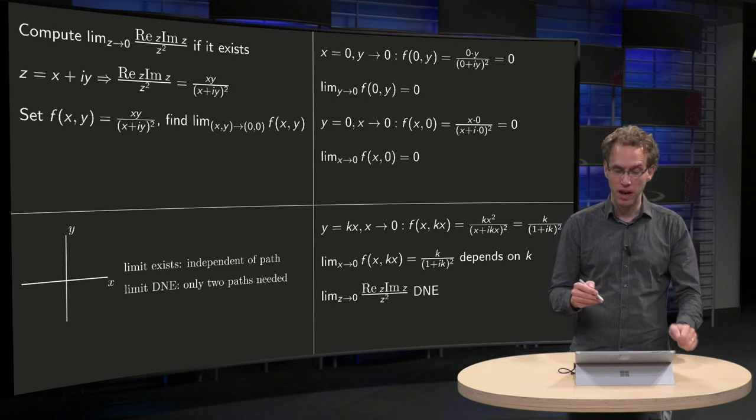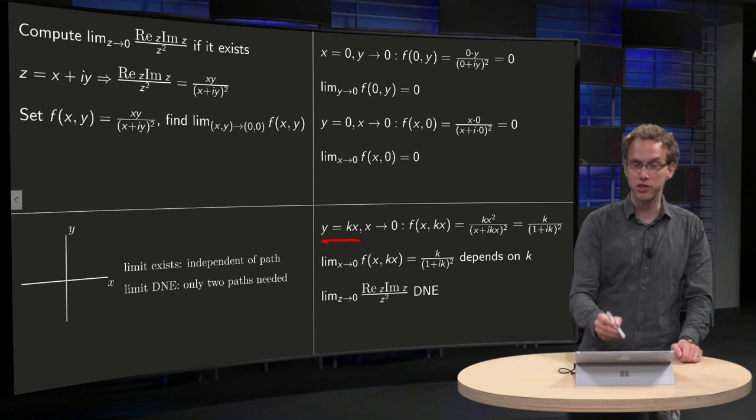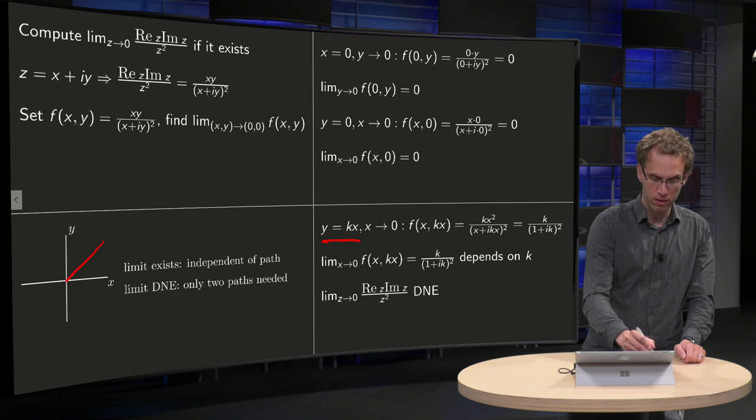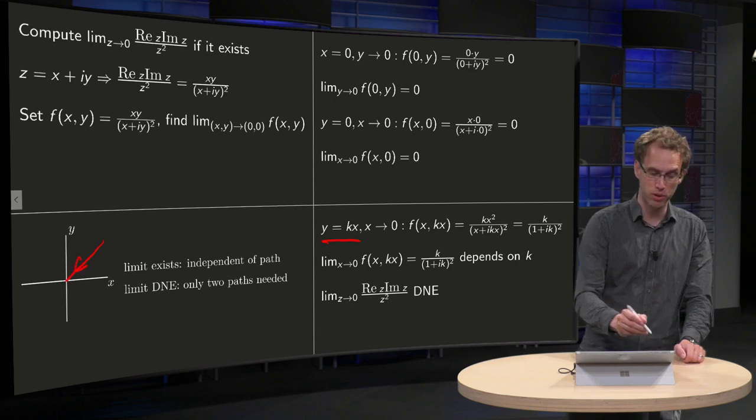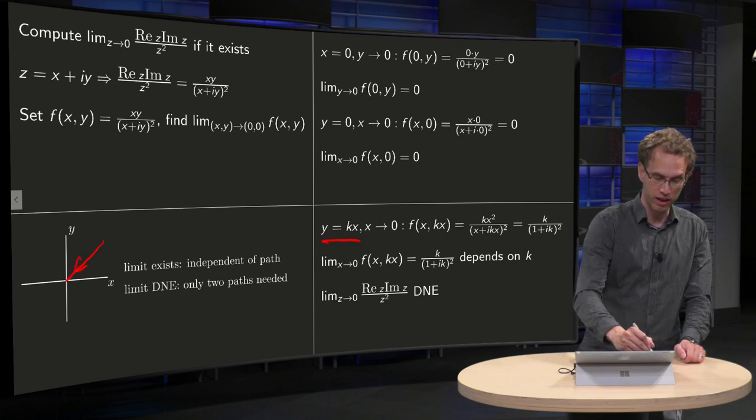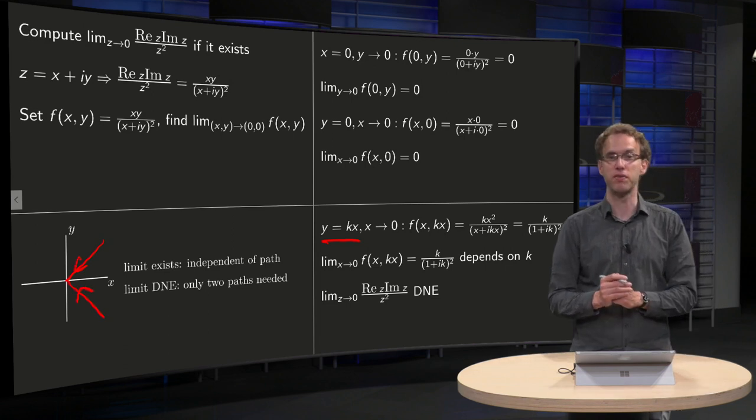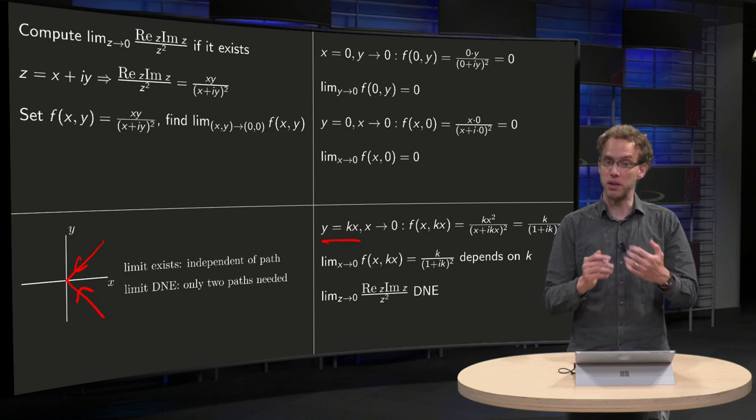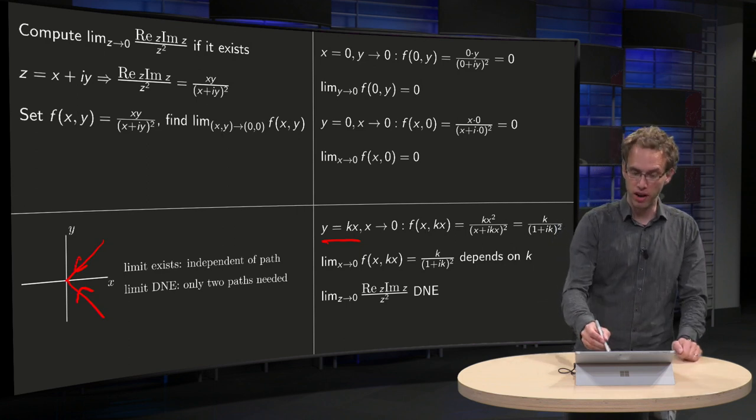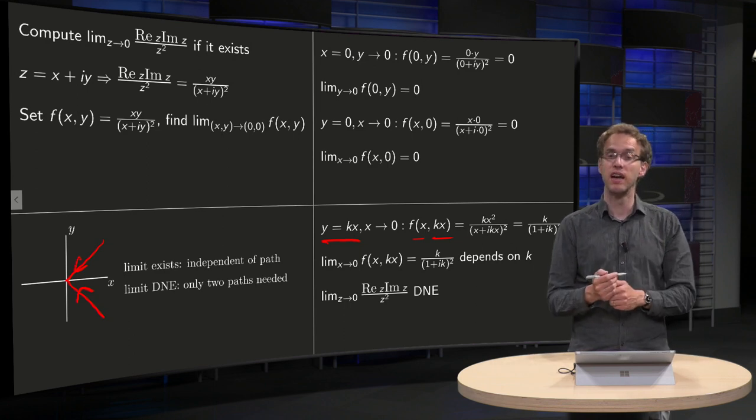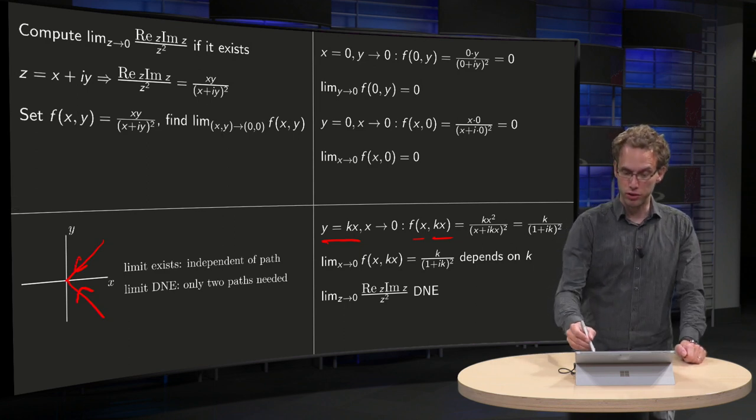Well let's see what happens if we go along the line y equals kx. So, quite a lot of paths, so we are going towards the origin like this, or with a negative k like that. So what happens? Well you do the same trick, you put in your f x and y equals kx and then you have to send x to 0. So first you substitute y equals kx over here and over there.